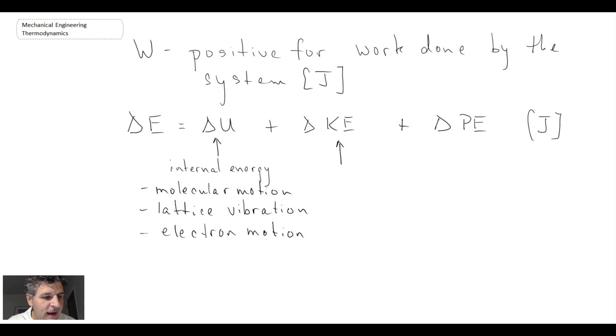Delta KE refers to the macroscopic motion of the system. So this would be if you have a big chunk of a bunch of molecules and they move together all at the same velocity. Even though the molecules themselves are moving around, this refers to all of them moving macroscopically. And finally, delta PE, that refers to a change in elevation with respect to some reference frame.